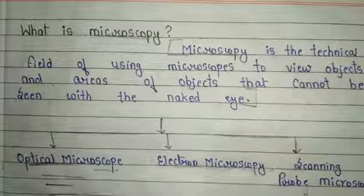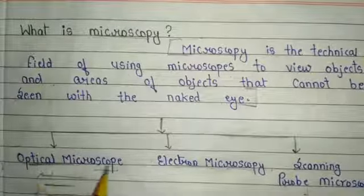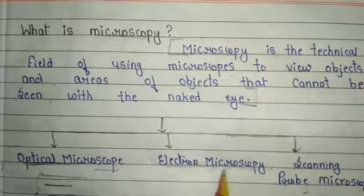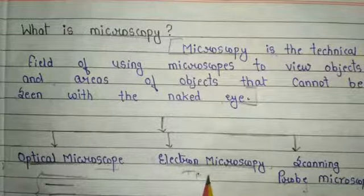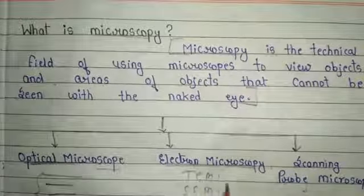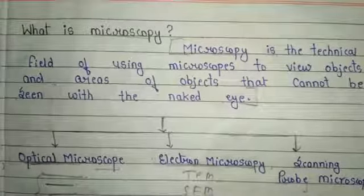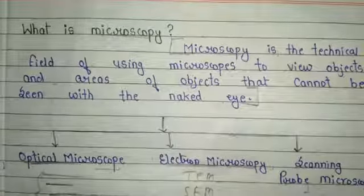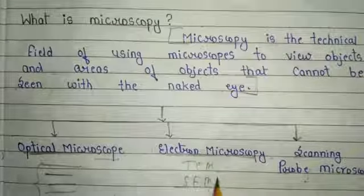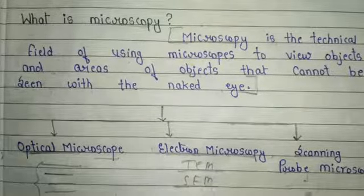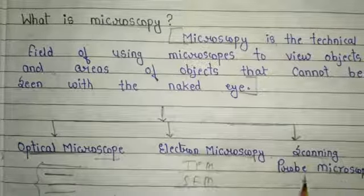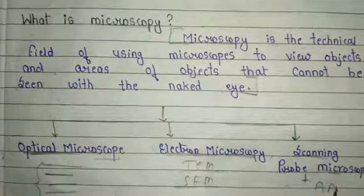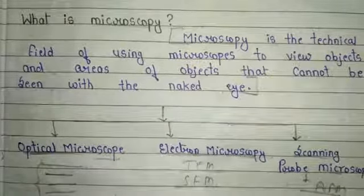There are many types of optical microscopy, like bright field microscopy, dark field microscopy, confocal microscopy, phase contrast, and fluorescence. Electron microscopy also has two types: TEM (transmission electron microscopy) and SEM (scanning electron microscopy). The third type, scanning probe microscopy, includes AFM — atomic force microscopy.